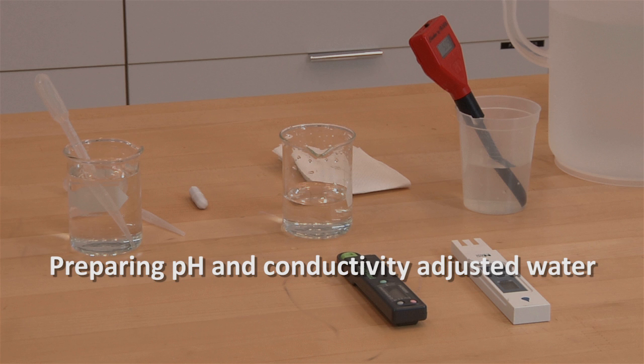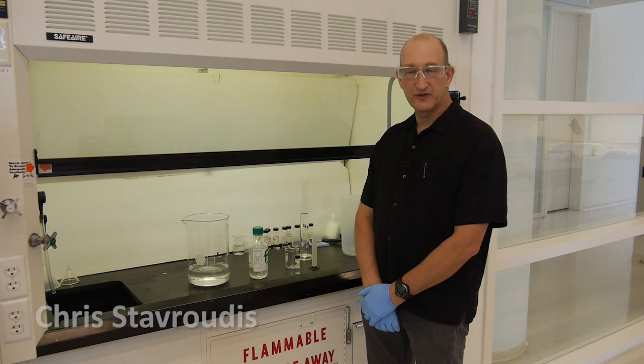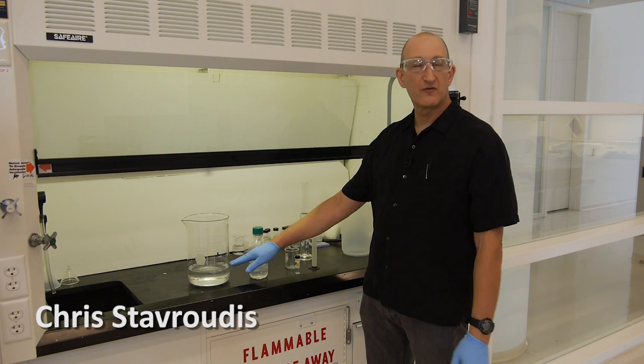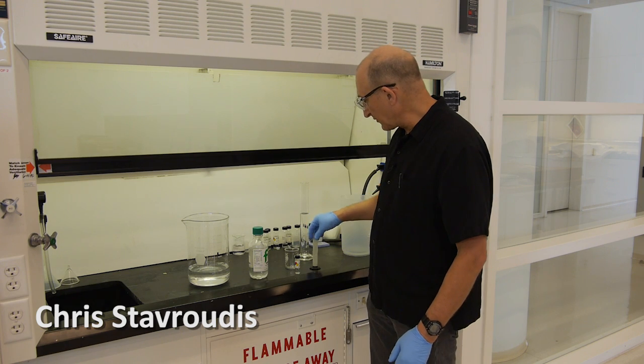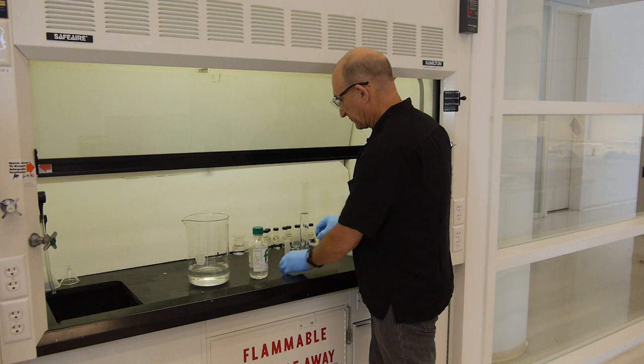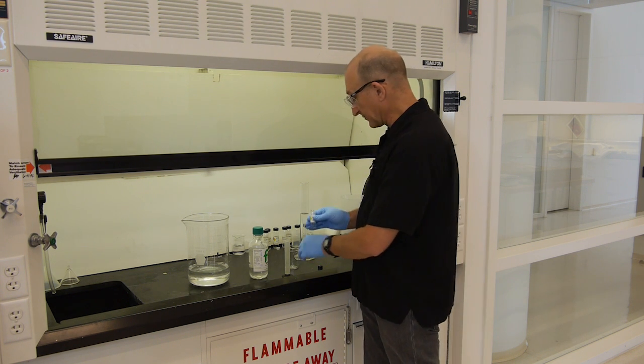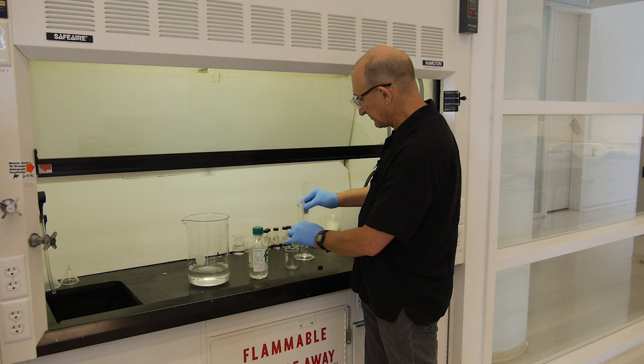To make the pH adjusted water, we're going to add 10 milliliters of glacial acetic acid to a liter of water. We want to do this in the fume hood or outdoors because it's pretty stinky. We also want to wear proper protective equipment when handling the concentrated acids and bases.